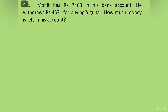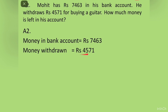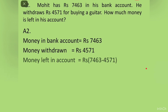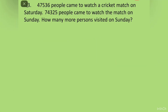Question 2: Mohit has Rs. 7,463 in his bank account. We write: money in bank account = Rs. 7,463. He withdraws Rs. 4,571 for buying a guitar, so money withdrawn = Rs. 4,571. How much money is left? We subtract: money left in account = Rs. 7,463 minus Rs. 4,571. We write them one below the other, find the answer: money left in account = Rs. 2,892.